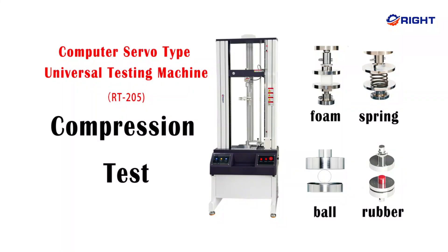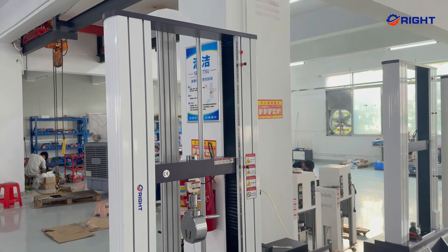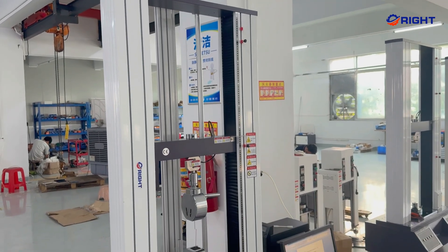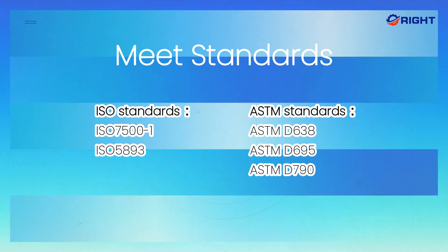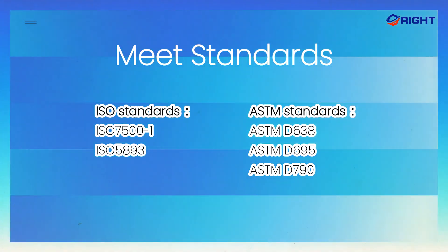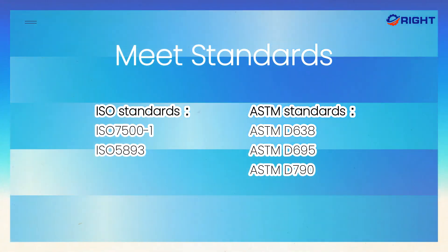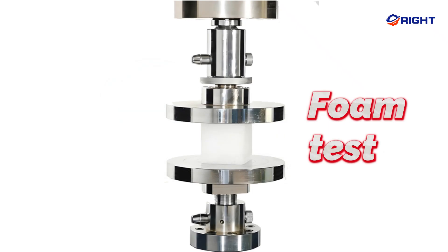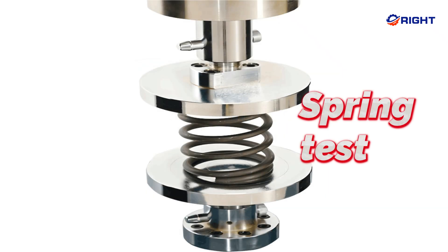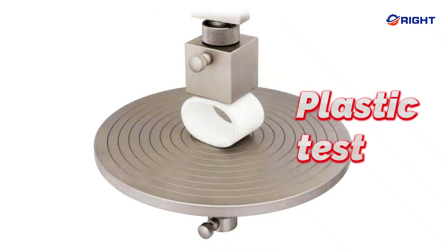RT-205 Computer Servo Type Universal Testing Machine has high accuracy and sensitivity for load, displacement, measurement, and control. The RT-205 Universal Material Compression Tester is mainly used to determine the mechanical properties of materials under axial static pressure, especially suitable for one-way compression yield point of metal materials and brittle materials' compressive strength.